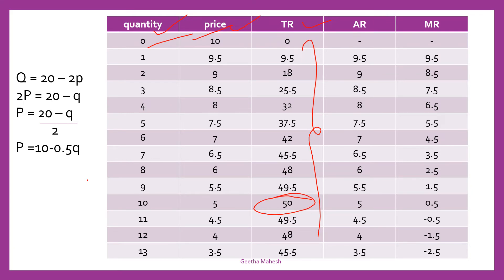So, a monopolist has to fix 5 rupees. At 5 rupees, consumers are ready to buy 10 units of output. When he fix 5 rupees and he is able to sell 10 units, then the total revenue is maximum.